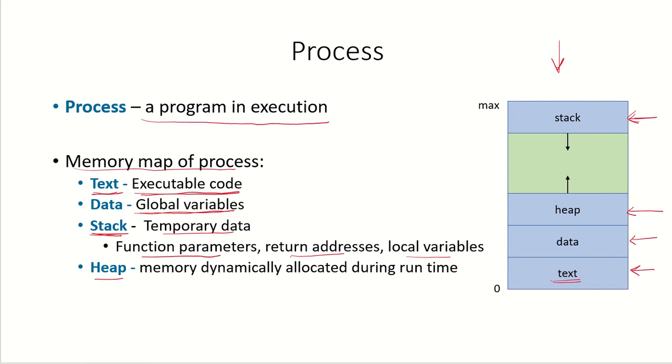There would be a heap section from which memory is allocated dynamically during run time. This is the address space of the process and each process can get a maximum of some space and this max is defined by the system.